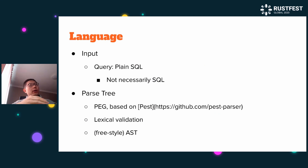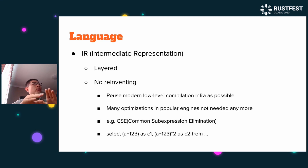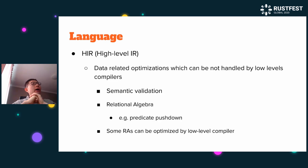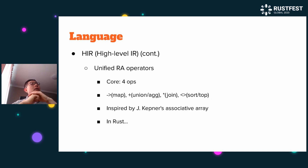Input is a plain SQL query parsed into a parse tree, where we do lexical validation. It is then transformed to the AST, and then transformed to IR — which is layered like Rust's compiler. The main reason is we want to reuse as much low-level compilation infrastructure as possible. The high-level IR (HIR) is made for handling data-related optimizations. In this phase, we do semantic validation and relational algebra. Some relational algebra can be optimized by the low-level compiler, which enables licensure in the high-level IR.